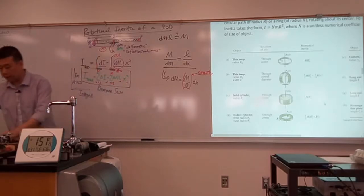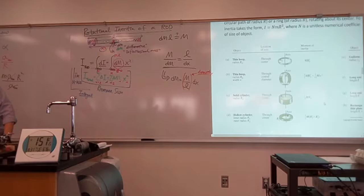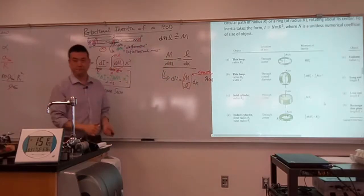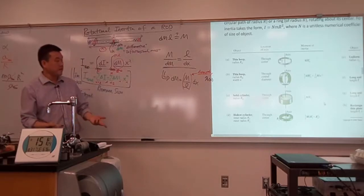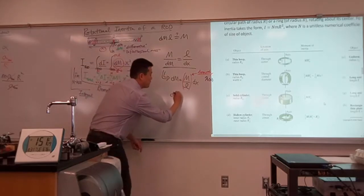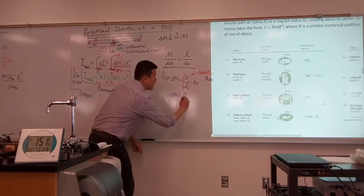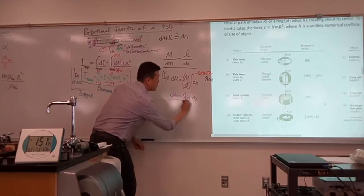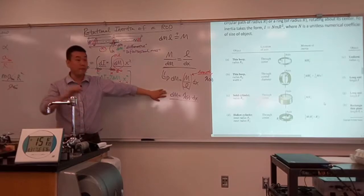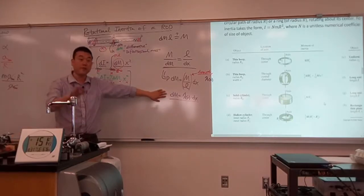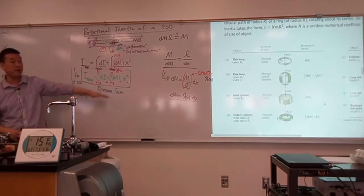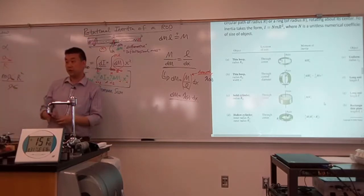The symbol we use for density is lambda. On the exam, what you will have to deal with is writing down the mass of the infinitesimal piece as the density lambda times the length dx. This is how I make sure there will be no memorized formula you can use for that exam problem — you actually have to know how to go through this calculation step.